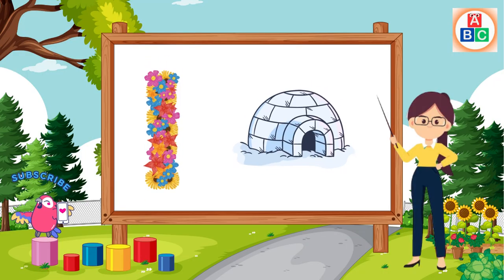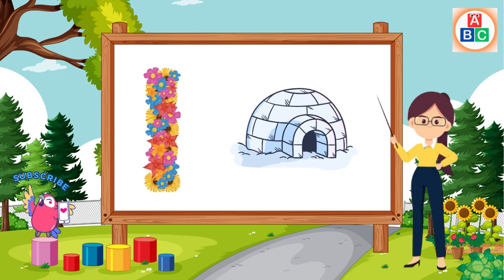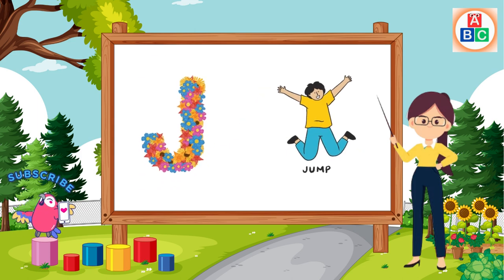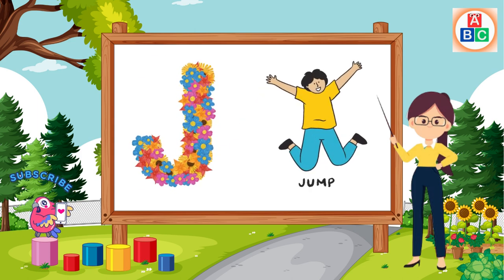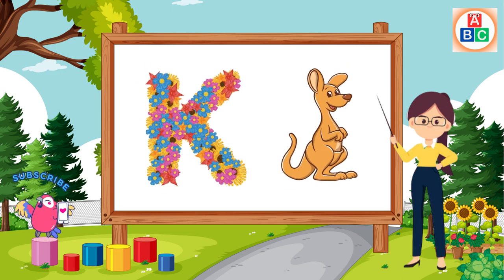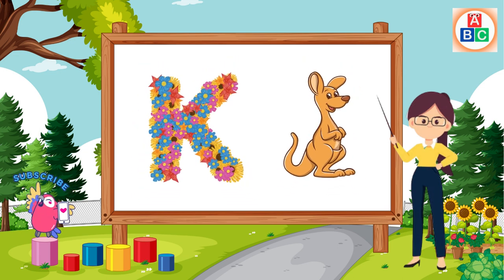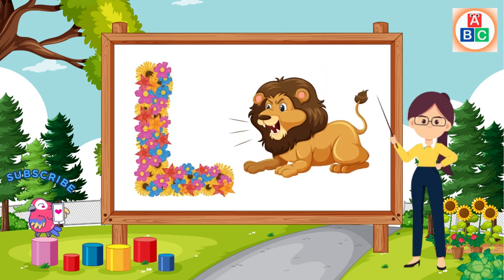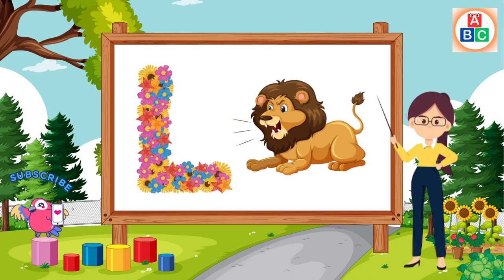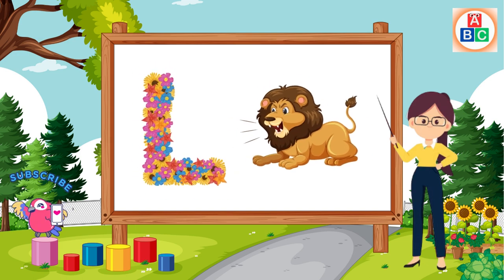I is for igloo, i-i-igloo. J is for jump, j-j-jump. K is for kangaroo, k-k-kangaroo. L is for lion, l-l-lion.